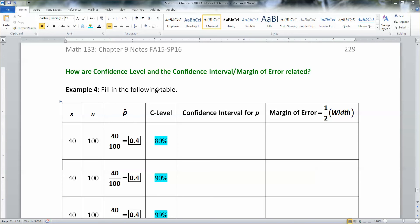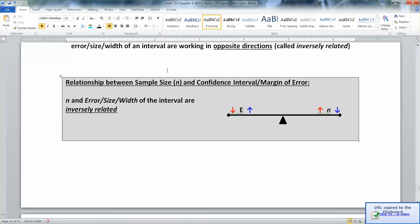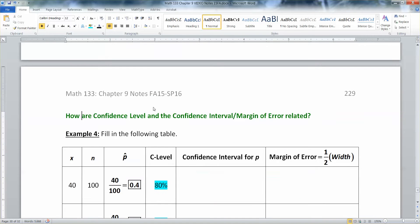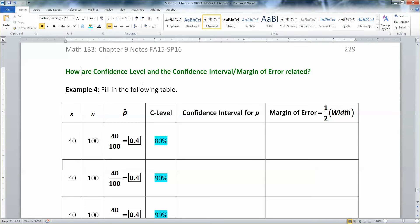In the last video we saw how sample size and margin of error are kind of on a teeter-totter with each other. The larger your error, the smaller your sample size and vice versa. Now we want to see how your confidence level and your margin of error are related.